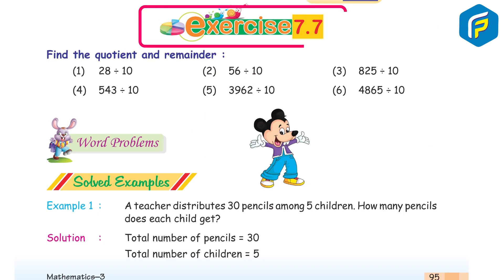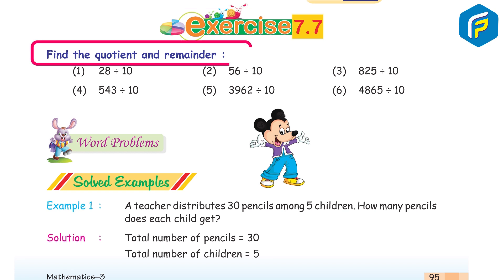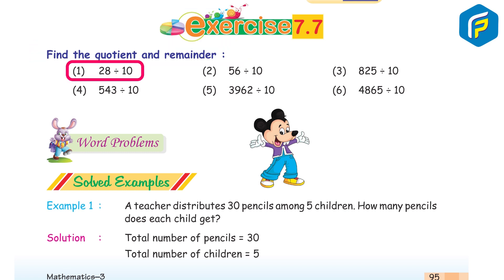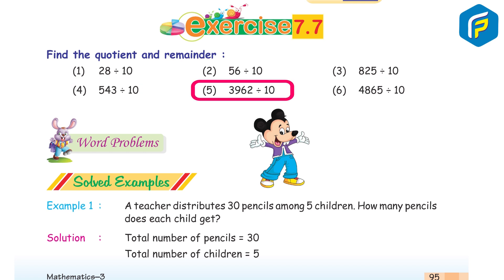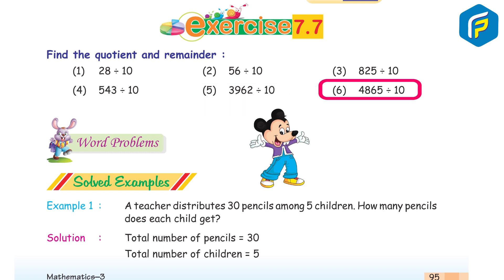Exercise 7.7: Find the quotient and remainder. 1) 28 ÷ 10. 2) 56 ÷ 10. 3) 825 ÷ 10. 4) 543 ÷ 10. 5) 3962 ÷ 10. 6) 4865 ÷ 10.